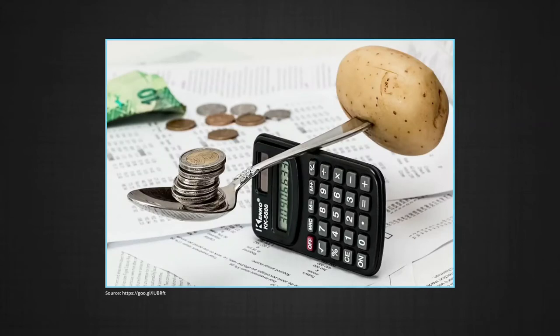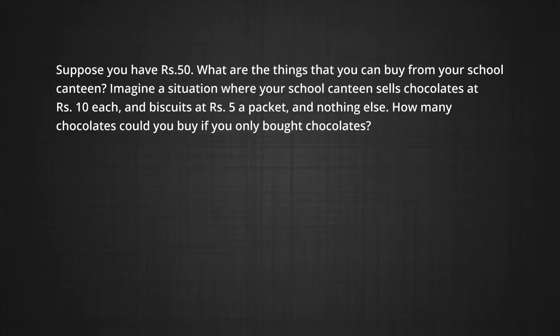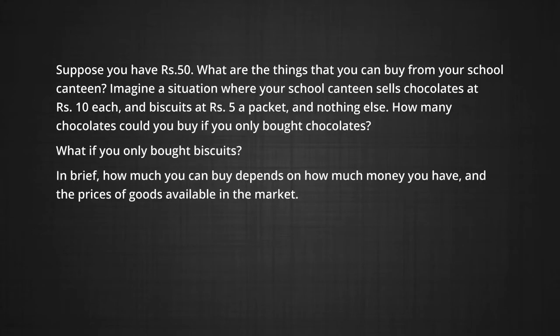Let us examine the second question first. What are the combinations of goods that the consumer can afford to buy? Suppose you have rupees 50. What are the things that you can buy from your school canteen? Imagine a situation where your school canteen sells chocolates at rupees 10 each and biscuits at rupees 5 a packet and nothing else. How many chocolates could you buy if you only bought chocolates? You could buy at most five chocolates. What if you bought only biscuits? You would at most buy 10 packets of biscuits.